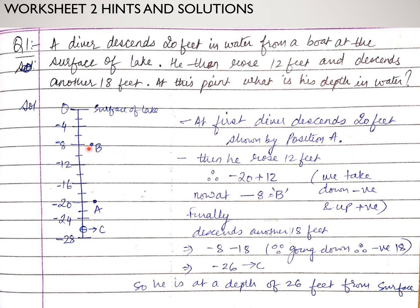You can see the position named as point B. Now finally, the diver again goes 18 feet down. From this point he again goes 18 feet down and reaches a final position, that is point C. The depth of point C from the surface of the lake is being asked. Earlier he was at minus 8, that is point B. He goes extra down, 18 feet. As he is going downwards, I have taken negative sign. So minus 8 and minus 18 gives minus 26, which is your point C. So the answer is: he is at a depth of 26 feet from the surface.